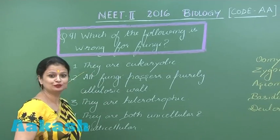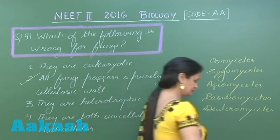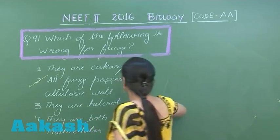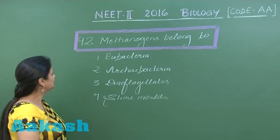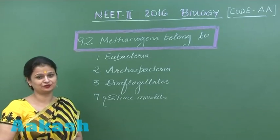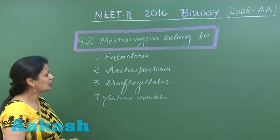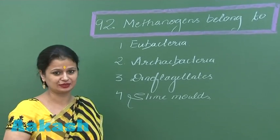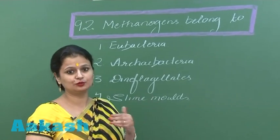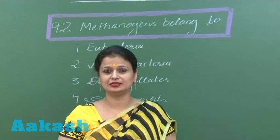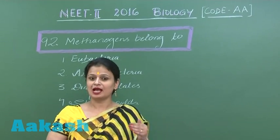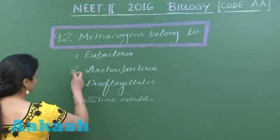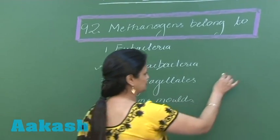Moving on to question number 92 — one of the easiest questions of this paper. Methanogens belong to Archaebacteria. There are 3 groups under Archaebacteria: methanogens, halophiles, and thermoacidophiles. So the right answer for this question is option number 2.